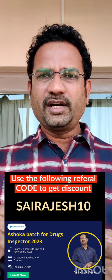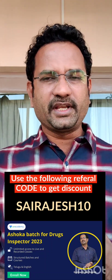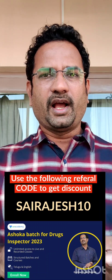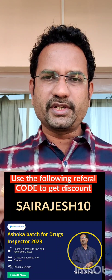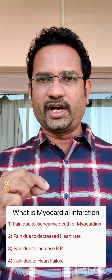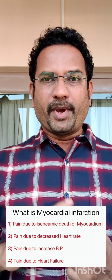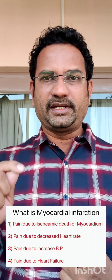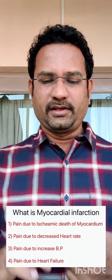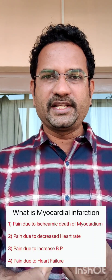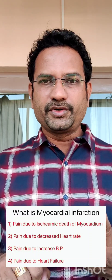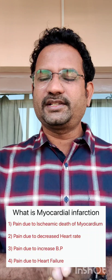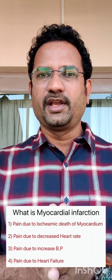Hello everyone. Myocardial infarction, ischemia, angina pectoris, heart failure — what are all these things? Let us understand them by answering a question from the drug inspector examination. What is myocardial infarction? Option 1: pain due to ischemic death of myocardial muscle. Option 2: pain due to decreased heart rate. Option 3: pain due to increased blood pressure. Option 4: pain due to heart failure.